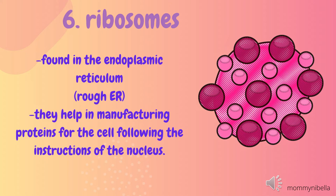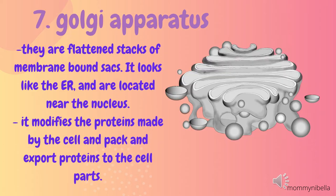Number seven: Golgi apparatus. They are flattened stacks of membrane-bound sacs. It looks like the ER and is located near the nucleus. It modifies the proteins made by the cell and packs and exports proteins to the cell parts.